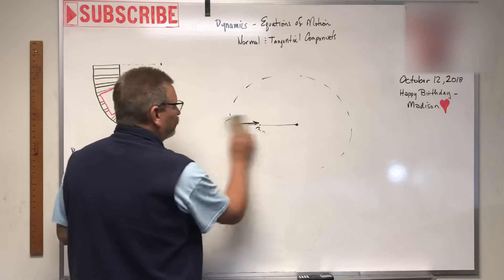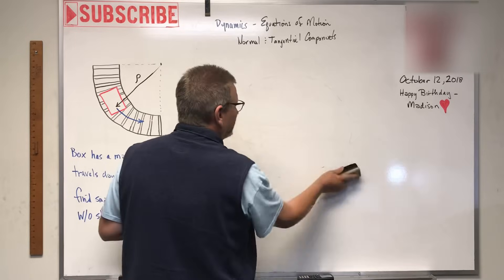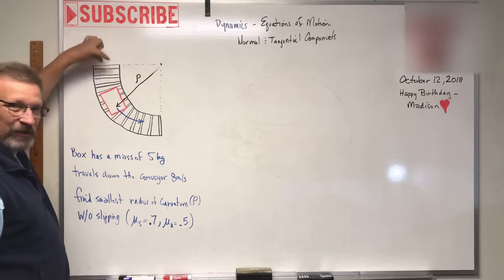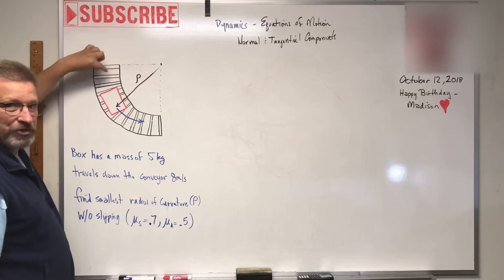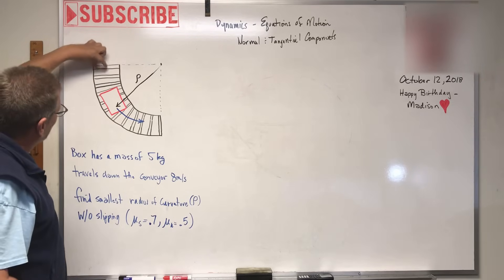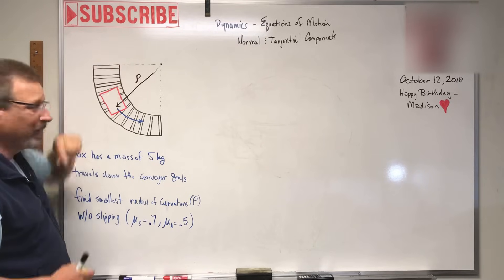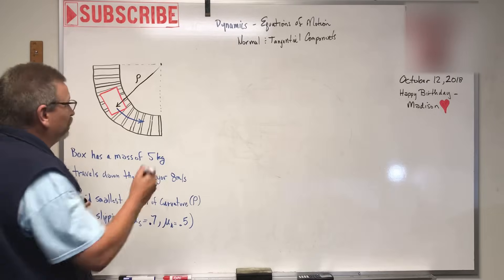Now that's out of the way, let's work this problem. We have a box on a conveyor - maybe this is your order leaving the Amazon shipping center - and it's coming around a corner of some radius of curvature ρ.